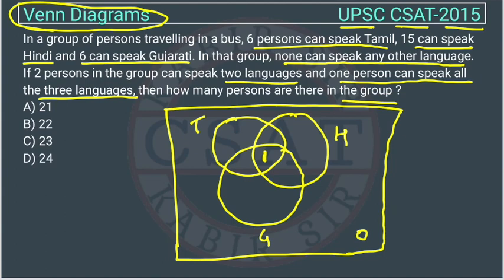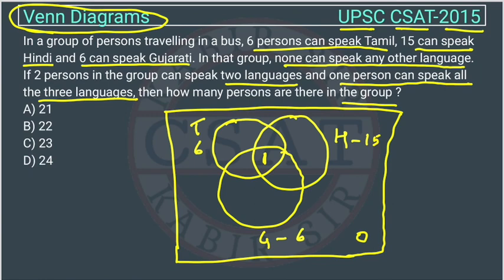They have given that 6 persons can speak Tamil, 15 can speak Hindi, and 6 can speak Gujarati. So Tamil will be 6, Hindi will be 15, and Gujarati will be 6. Now they have given that there are 2 persons who speak 2 languages, but they have not specified which languages.